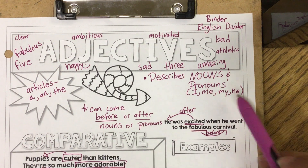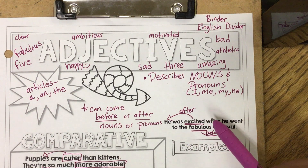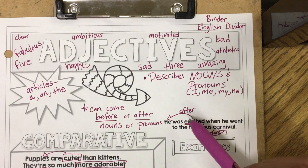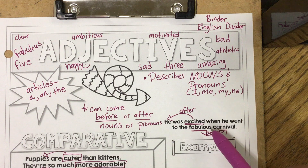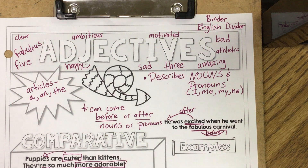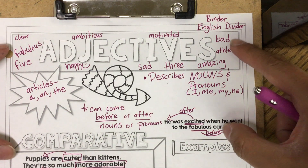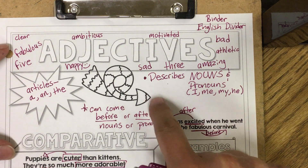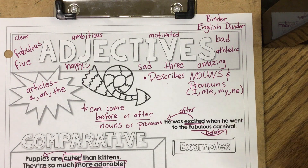The word 'excited' is our adjective and it came after the noun 'he,' which is our pronoun. So remember, adjectives can come before or after nouns and pronouns. Please pause the video to catch up and have the top part of the notes filled out exactly the way they look on my paper.